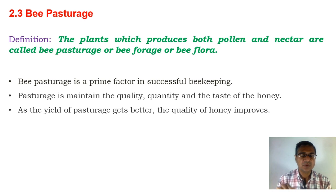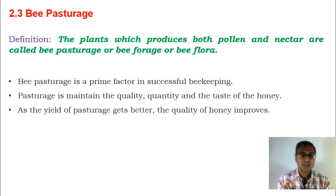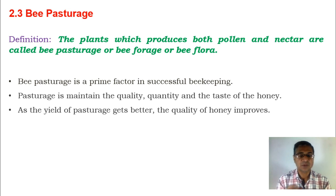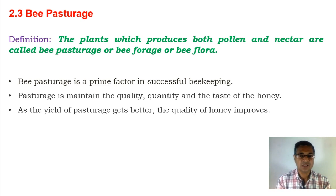That bee pasture is a prime factor in successful beekeeping. On one side, beekeeping totally depends on the honeybees and their efficiency to collect the pollen and nectar used as food material. But the pasture also maintains the quality, quantity, and the taste of the honey. Indirectly, colony maintenance, increasing the colony, as well as increasing the productivity — especially that of the honey — totally depends on the bee pasture here.